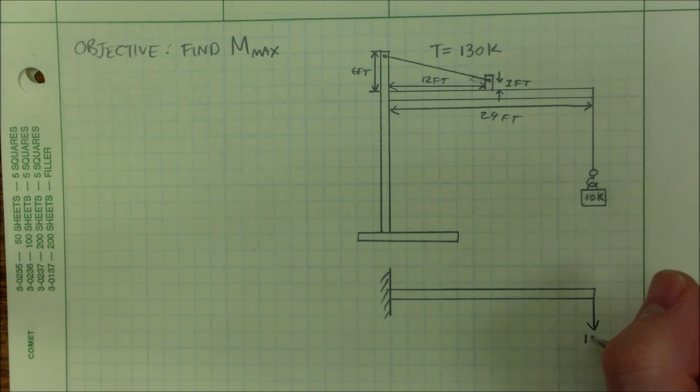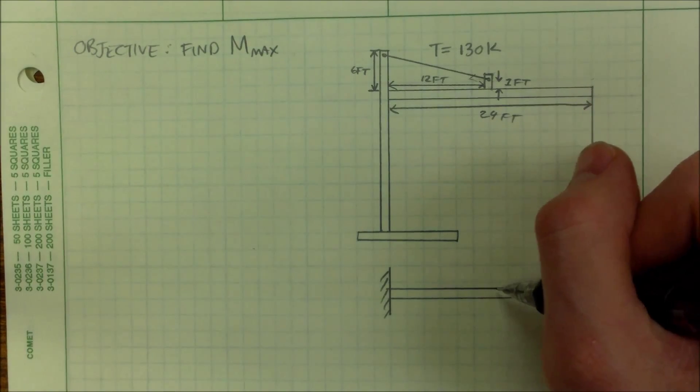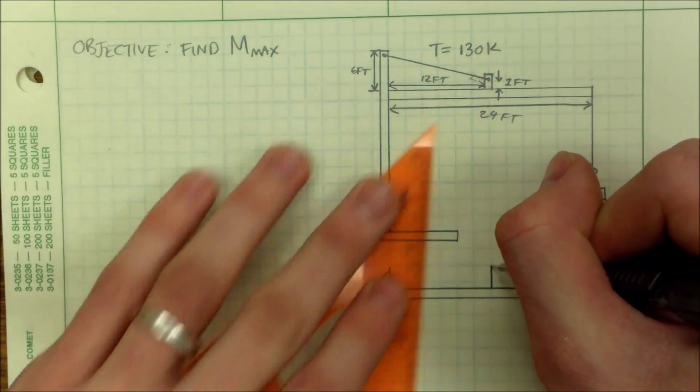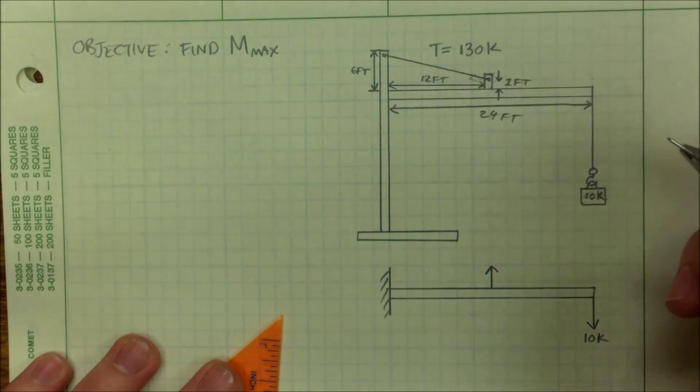Okay, this is just 10 kips. I need to know I have some kind of vertical force right here. That's helpful.